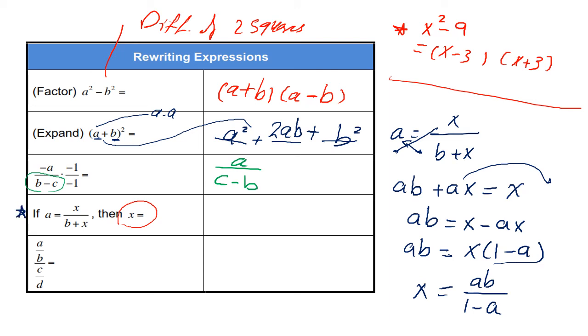Finally, if you have a fraction divided by a fraction, the easiest method to write it is to multiply the top numerator with the denominator. Up, and in the denominator you multiply B and C. For example, 2 over 3 divided by 4 over 5. So I multiply 2 by 5 up, which is equal to 10, and 3 by 4 here, which is equal to 12.